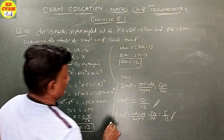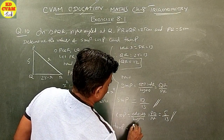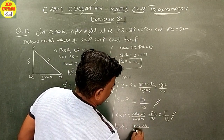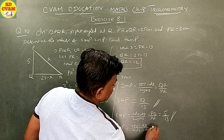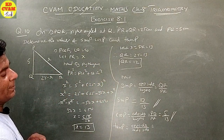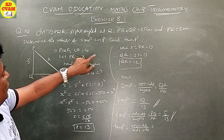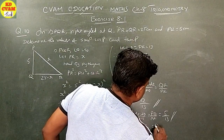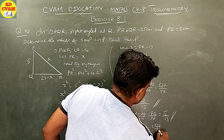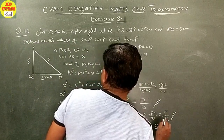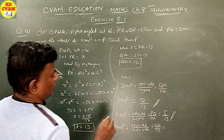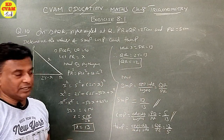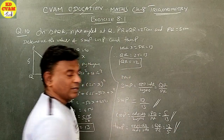Tan P is equal to opposite side upon adjacent side, which equals QR upon PQ. That is, 12 upon 5. I hope you understood.